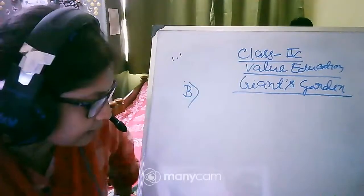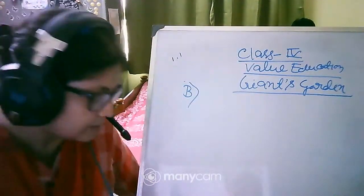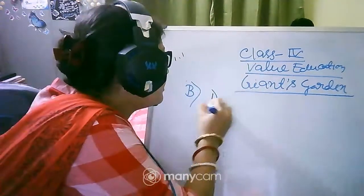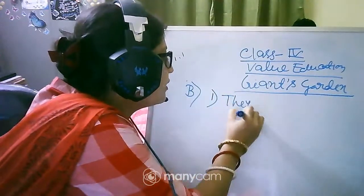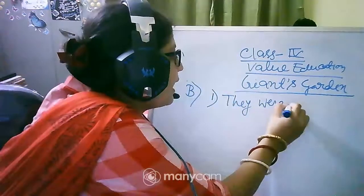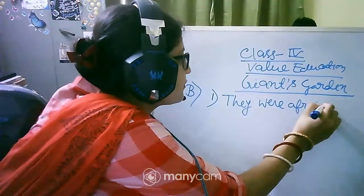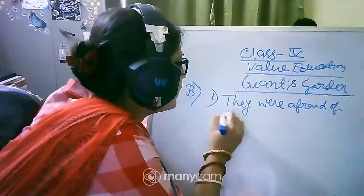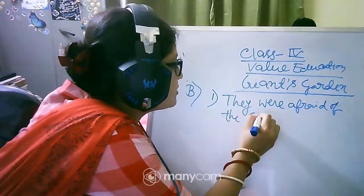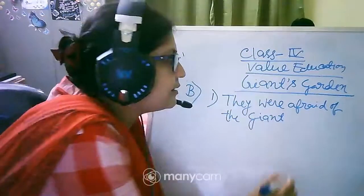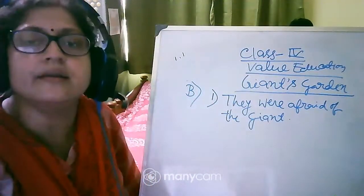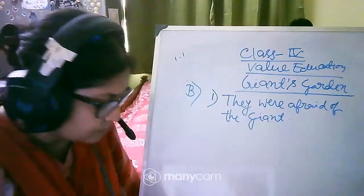So only you can write they were afraid of the giant. B number one, they were afraid of the giant. So at that time they were going when the giant was not at home.